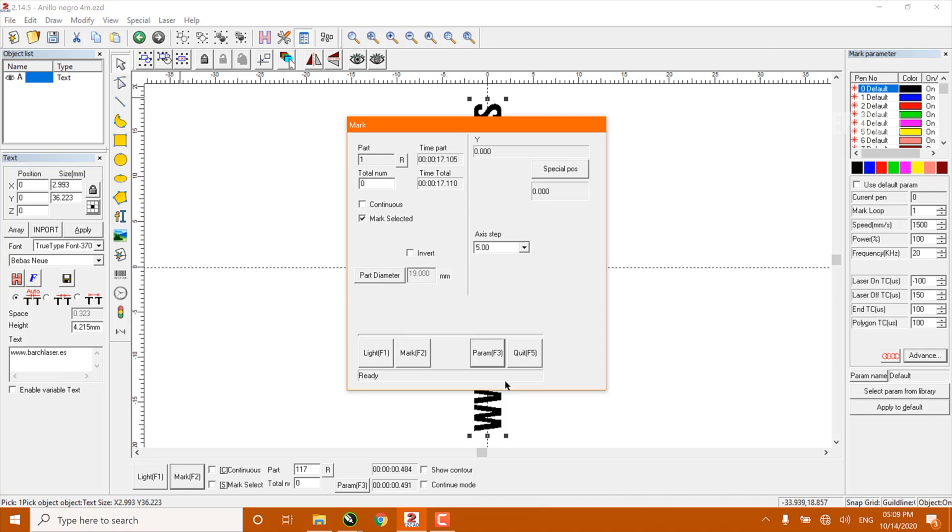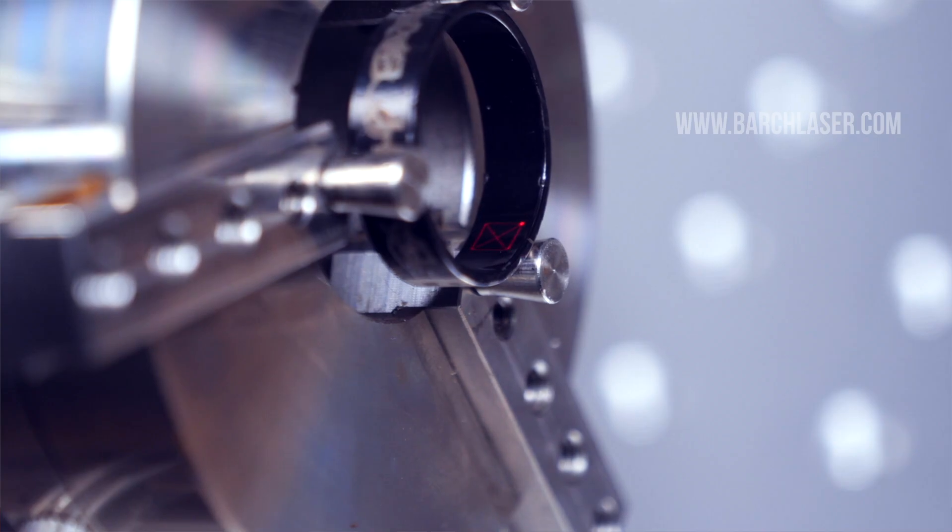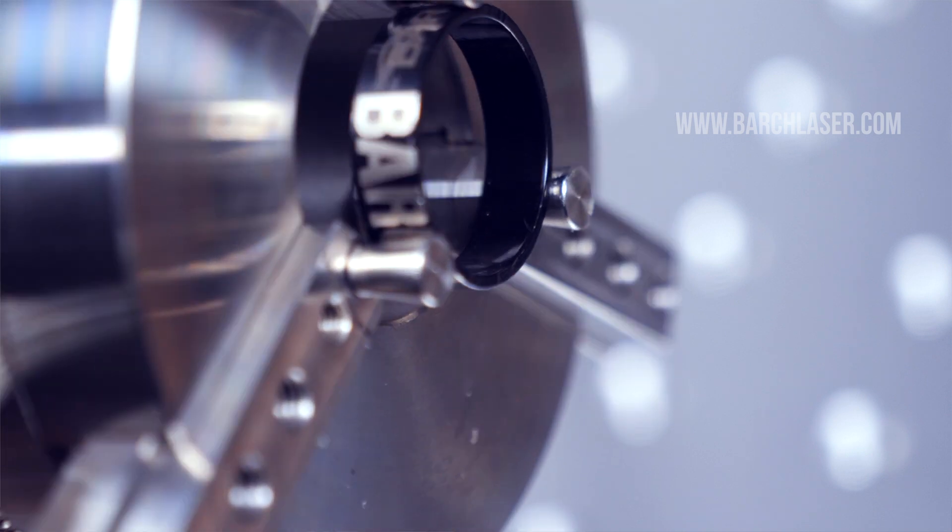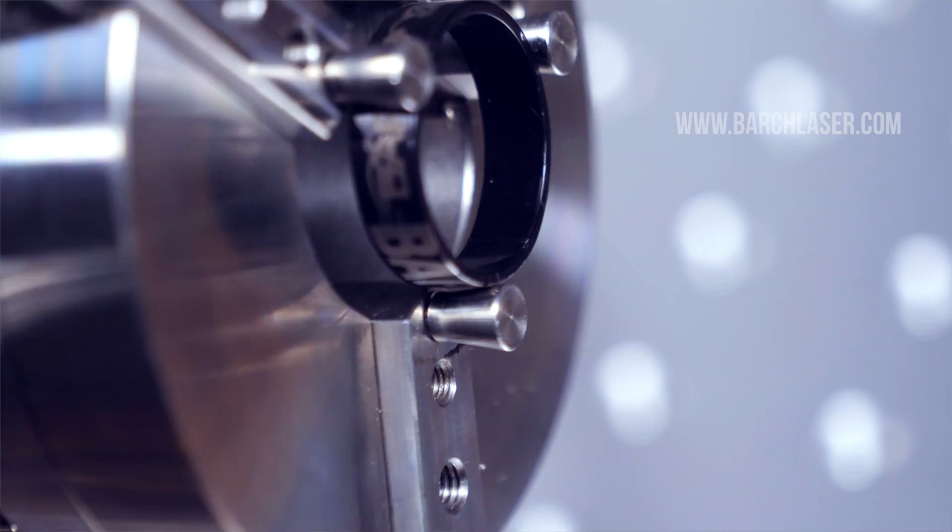Also make sure to select the option invert. Press F1 to see the engraving area and then press F2 to begin the engraving.